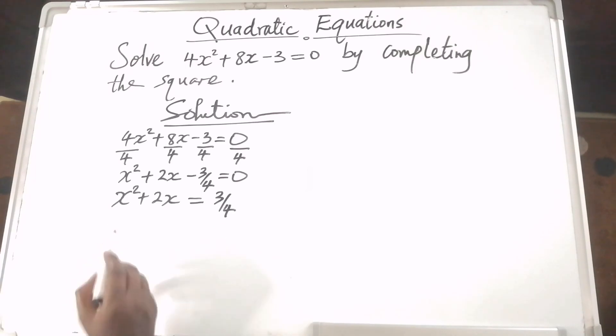Let's make the left-hand side a perfect square. To get the missing value c in x squared plus 2x plus c, we need to divide the coefficient of x, which is 2, by 2 and square it.